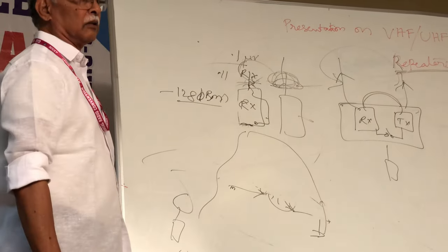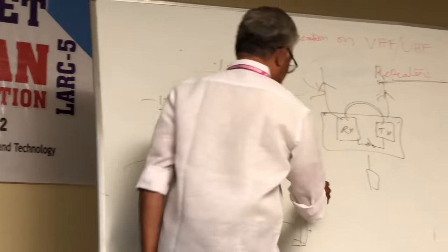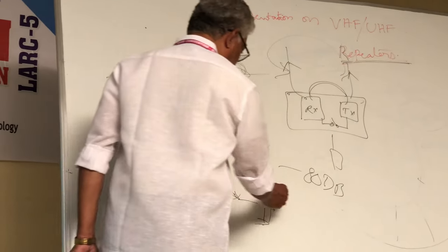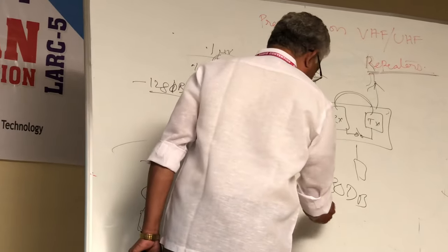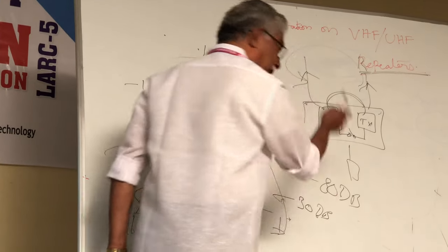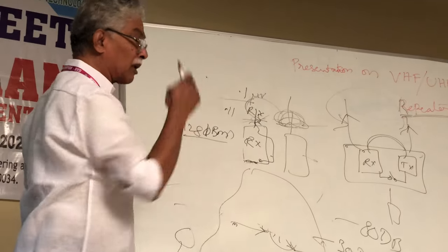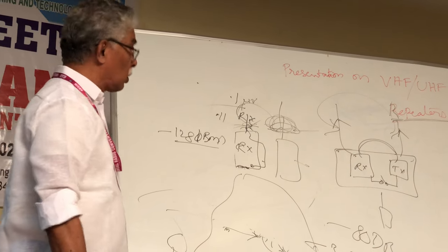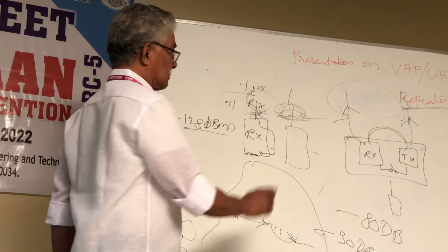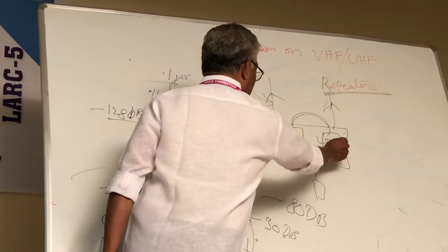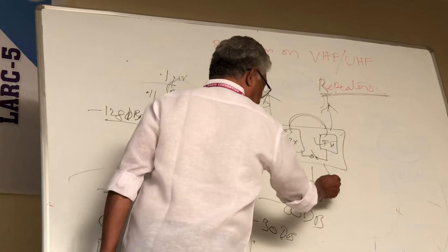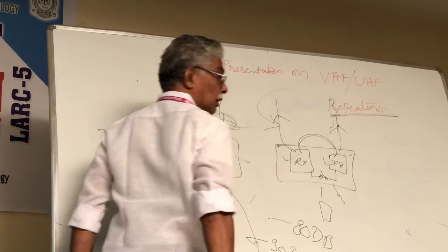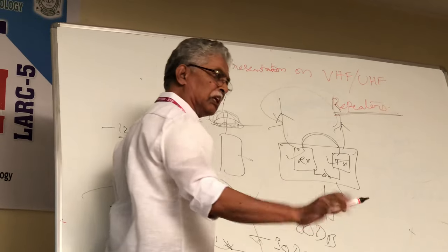We are achieving only minus 30 or minus 25 dB and saying we have a good repeater. So the main thing is: arrange the RX, arrange the TX, a power supply, arrange antennas and make a COR. Just knowing that is a joke — it is a half-day Sunday project. But the most important section is how to operate your repeater effectively with effective communication.